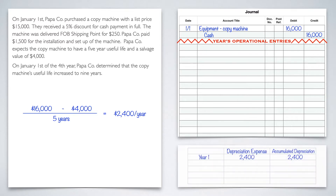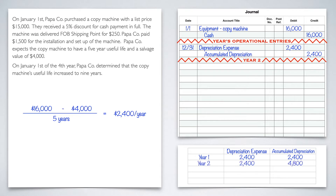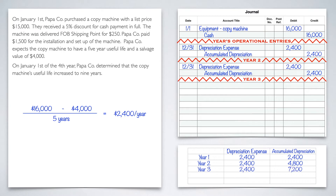It's still going to be the same. Year one is going to be the same, so the journal entry is going to be the same. Year two is going to be the same, year three — so on and so forth. Then we get to year four. It says on January 1st of the fourth year, Papa Company determines that the copy machine's useful life increased to nine years.